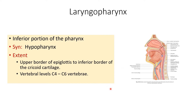The laryngopharynx is also known as the hypopharynx. It is the inferior portion of the pharynx, extending from the upper border of the epiglottis to the inferior border of the cricoid cartilage. In this picture you can see the laryngopharynx, which corresponds to vertebral levels C4 to C6.